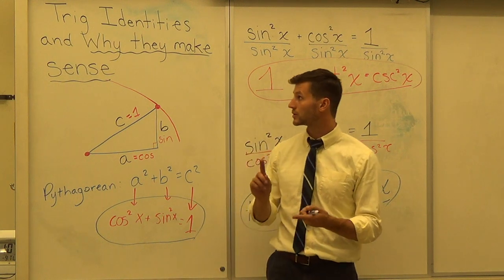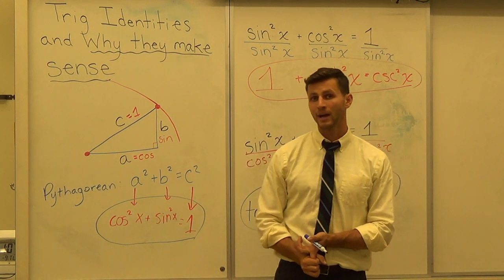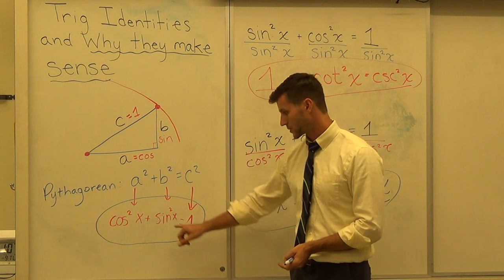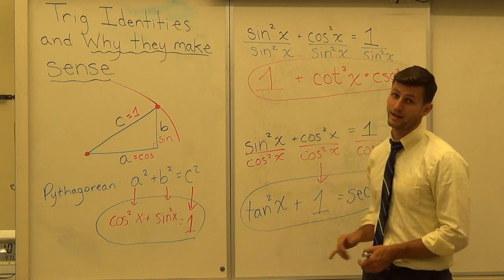But they're all connected back to the Pythagorean Theorem and the fact that a squared plus b squared equals c squared. So I hope this helps you understand why they make sense and why you only really need to memorize the first one because you can use it to find out the other two.